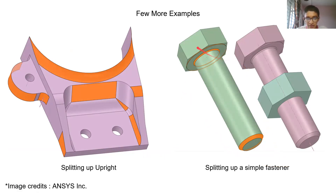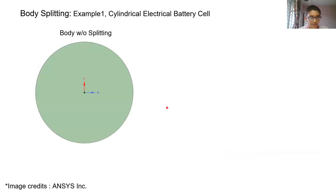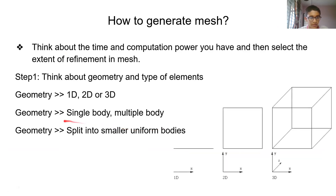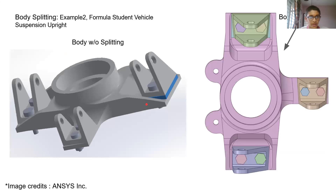For a simple fastener, parts have been defined as well: this is one part, this is the second part, this small disk is the third part, another disk is the fourth part, and the hexagonal head is the next part. You should understand this process of splitting and be able to classify your body or geometry, then accordingly choose the type of modeling or simulation you want to do.